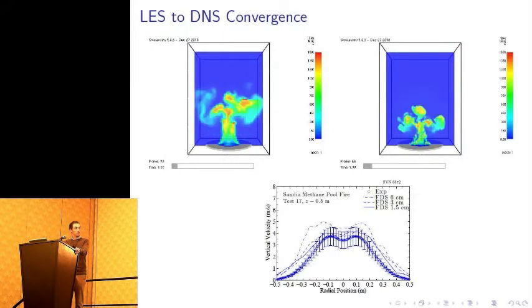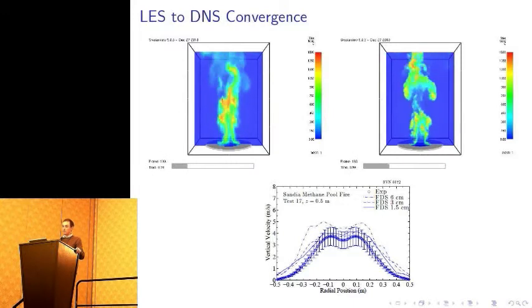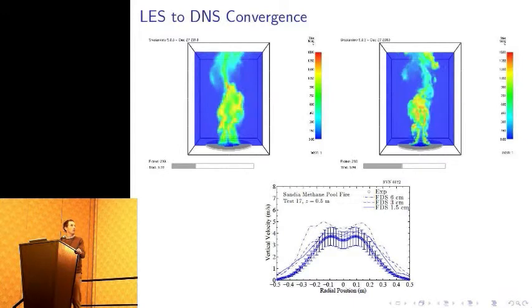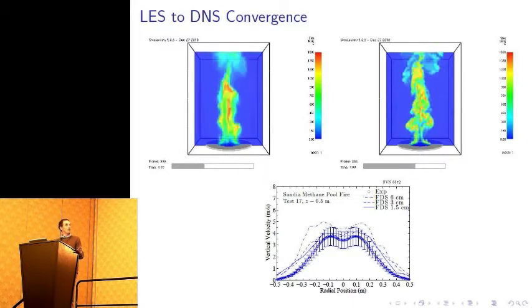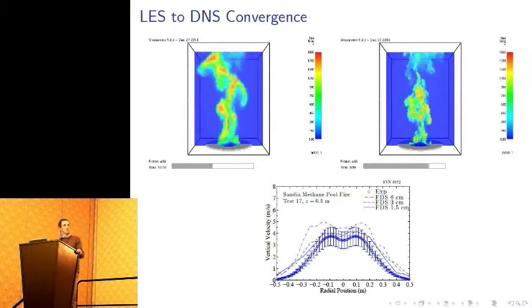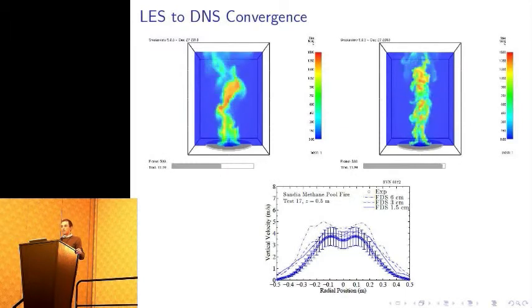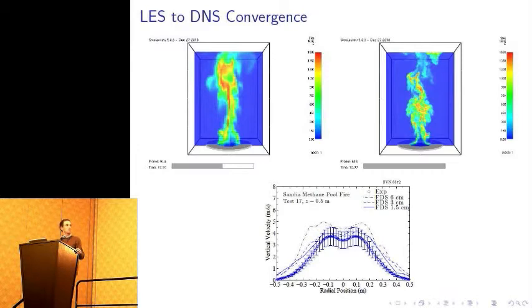So a prerequisite for assigning a mesh resolution that we believe in is what we call LES to DNS convergence. LES means large eddy simulation and DNS means direct numerical simulation. And DNS in its truest form, we hope can be thought of as a substitute for experiment. We actually say that we trust the physics of the model. So conceptually, if I have a coarse resolution, here we're looking at an example of a methane pool fire and a fine resolution, I always want to be able to trust that my finer resolution is a better representation of the physics than my coarser resolution. Sometimes I review papers where people have actually run finer resolution and found worse results and they go back and use the coarser resolution results. And this is a major problem.